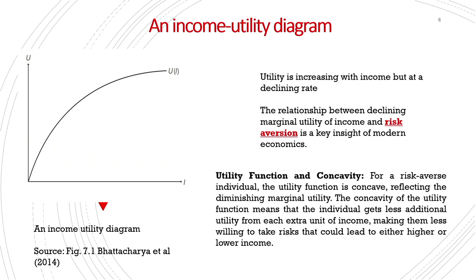The concavity of the utility function means the individual gets less additional utility from each extra unit of income, and therefore is willing to take less risks that could lead to either higher or lower income. This is the utility function of a risk averse individual making a rational choice about what premium to pay on future health expenses. The risk averse individual is making a decision about purchasing insurance under conditions of uncertainty.